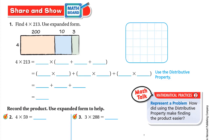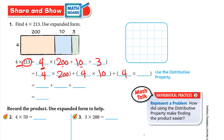Now for Share and Show: find 4 times 213. We keep the 4, multiply, and open two parentheses. The expanded form of 213 is 200 plus 10 plus 3. We multiply 4 by each number: 4 times 200 — 4 times 2 is 8 and we write two zeros — is 800. Plus 4 times 10 is 40. Plus 4 times 3 is 12.